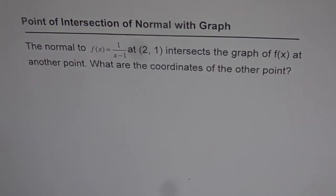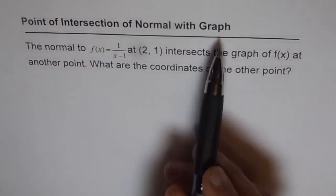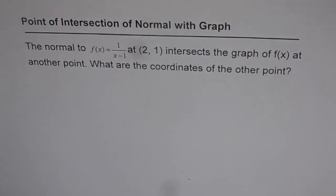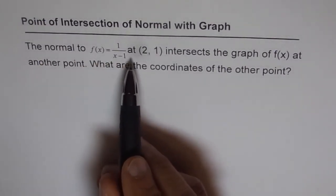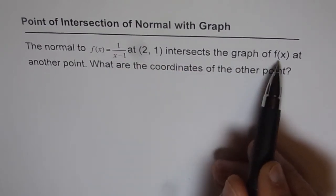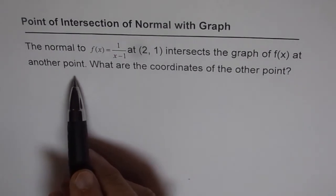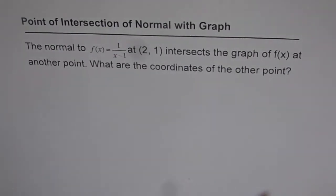Here is an extension to the previous question which we solved. The question is: we need to find the point of intersection of the normal with the graph. In the last video we had an example where we found the equation of normal to the graph. The normal to the function 1 over x minus 1 at (2, 1) intersects the graph of f(x) at another point. What are the coordinates of the other point?